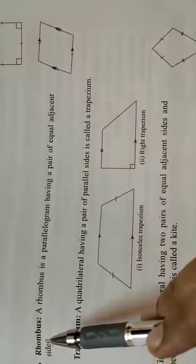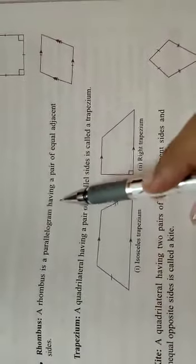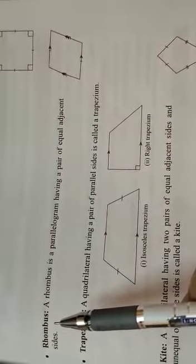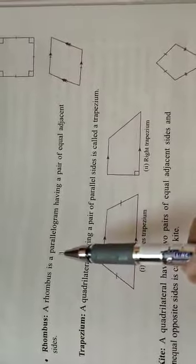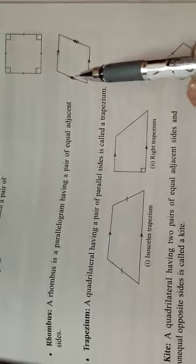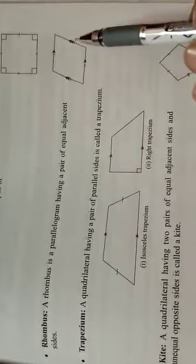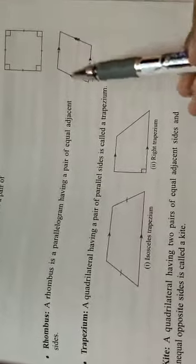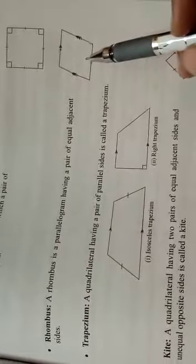Now, what is a rhombus? A rhombus is a parallelogram having a pair of equal adjacent sides. It means that in a rhombus, adjacent sides are equal, and since opposite sides are already equal in a parallelogram, automatically all sides of a rhombus are equal. In other words, a rhombus is a quadrilateral in which all sides are equal and opposite sides are parallel.